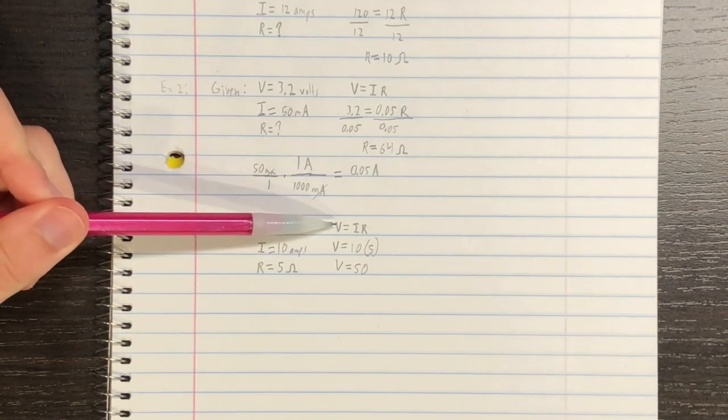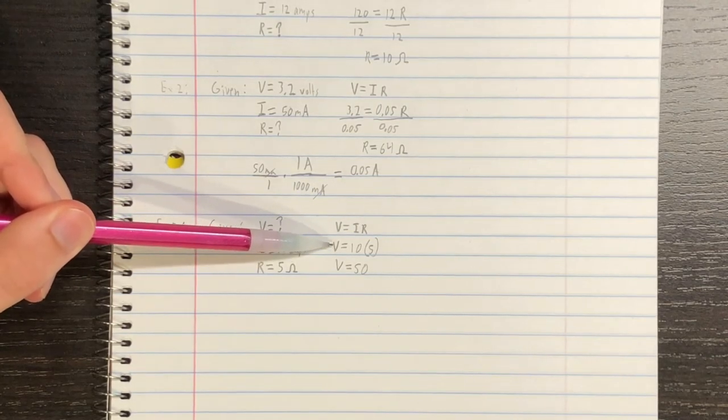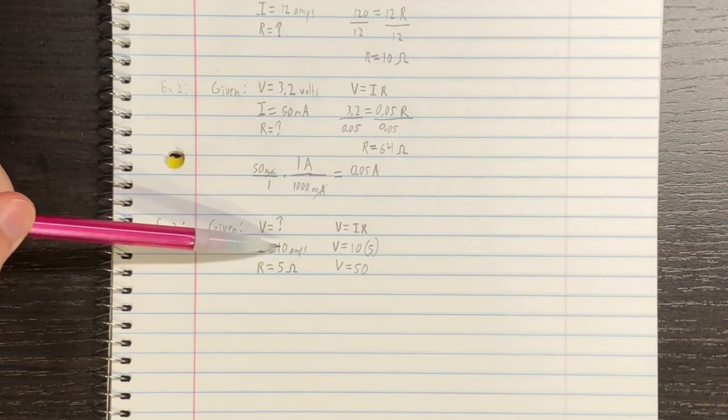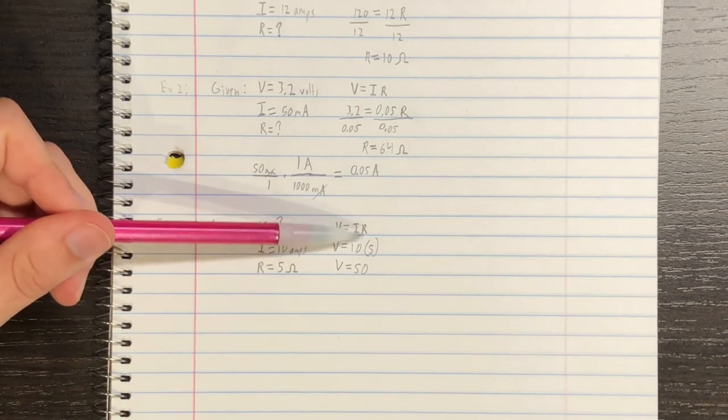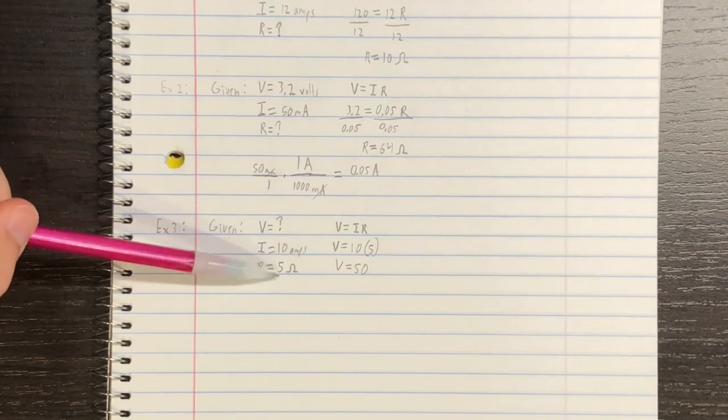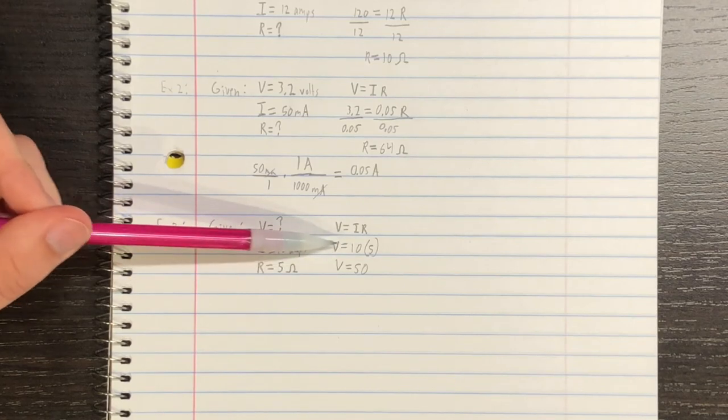So, on the right here, we start by writing V is equal to IR. And then, underneath it, we write V is equal to, and we know I is equal to 10 amps. And then, resistance, in this case, is equal to 5 Ohms. So, we put these values in, in these variables. And now, we just simplify this equation.